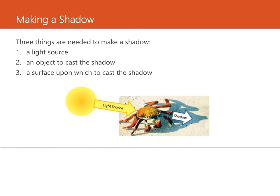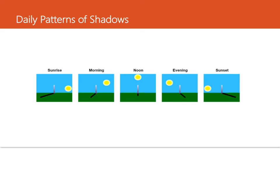In this picture, the light source is the sun, the object is the crab, and the surface is the sand. The shadow is on the opposite side of the crab from the light source. As the sun seems to rise, travel across the sky, and set, light from the sun hits the Earth from different directions. So shadows made by the sun get longer, get shorter, or even go away. The shadows cast by the sun always point directly away from it.